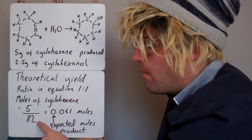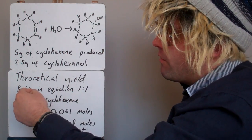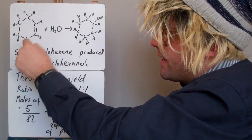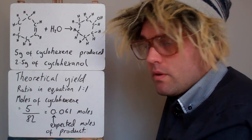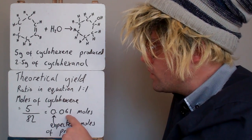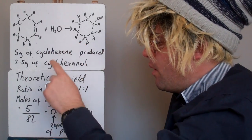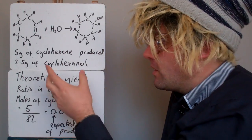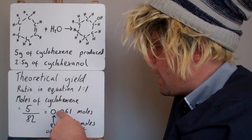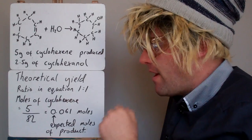The molar mass of cyclohexene is 6 carbons, so 6 times 12, plus 10 hydrogens, which gives us 82. So 5 divided by 82, to two significant figures, gives us the moles of cyclohexene. And because the ratio is 1 to 1, that would be the expected moles of product. So if this was a 100% efficient reaction, we should get 0.061 moles of cyclohexanol. That's our theoretical yield — in theory, that's how many moles we should produce.